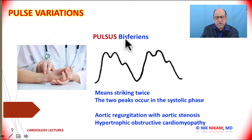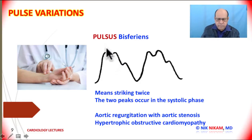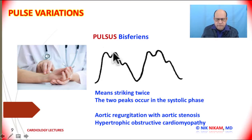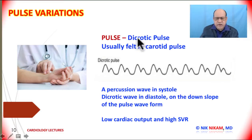Pulsus bisferiens means there are two systolic peaks with each waveform, along with the dicrotic notch as a separate event. Bisferiens means 'striking twice' — like a hammer hitting twice. The two peaks appear during the upstroke of the pulse waveform, not during the dicrotic notch. This is seen in patients with aortic regurgitation, aortic regurgitation combined with aortic stenosis, and severe hypertrophic obstructive cardiomyopathy.